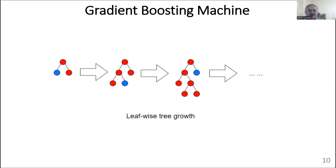Gradient Boosting Machine is a gradient boosting algorithm that improves predictive power by sequentially fitting decision trees, each of which refines and improves upon previous predictions. Each of these methods contributes to the development of machine learning, enabling a large amount of data to be analyzed accurately and efficiently, and making informed predictions in a variety of applications.